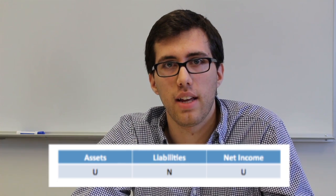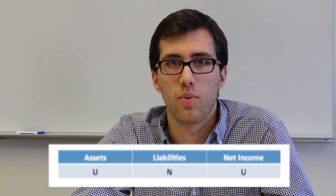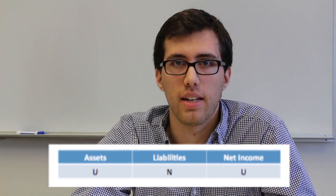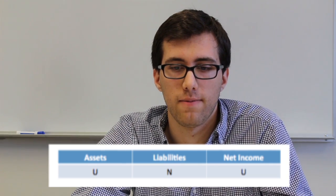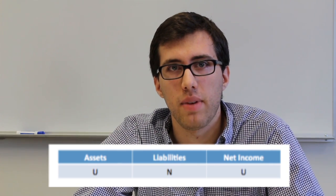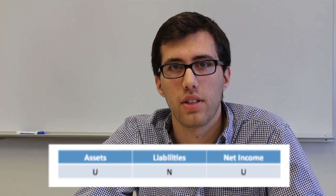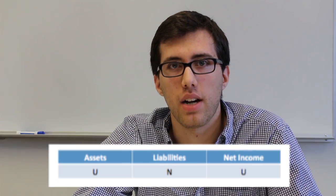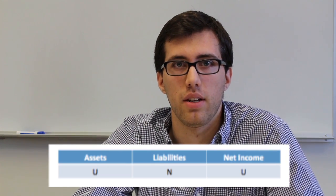So what should our answer look like? Since cash is an asset, we would say that assets are understated, and since rent expense affects net income, we would say that net income is understated as well. Even though rent expense is overstated, we would show net income as being understated because the higher your expenses are, the lower your net income is going to be.